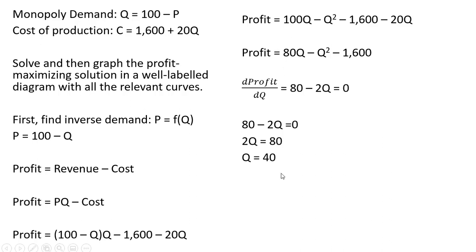To get the profit maximizing price, we're going to take this 40 units and plug it into the inverse demand. So 100 - Q, where Q is 40, we have a profit maximizing price of $60.